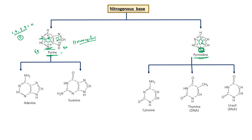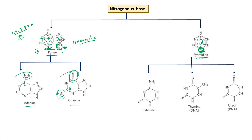An important question is: when the sugar attaches to a nitrogenous base, which nitrogen is involved? In purine, the sugar attaches at the 9th nitrogen. In pyrimidine, the sugar attaches at the 1st nitrogen. Among purines, adenine and guanine differ: adenine has an amino group at carbon 6, while guanine has a ketone group at carbon 6.